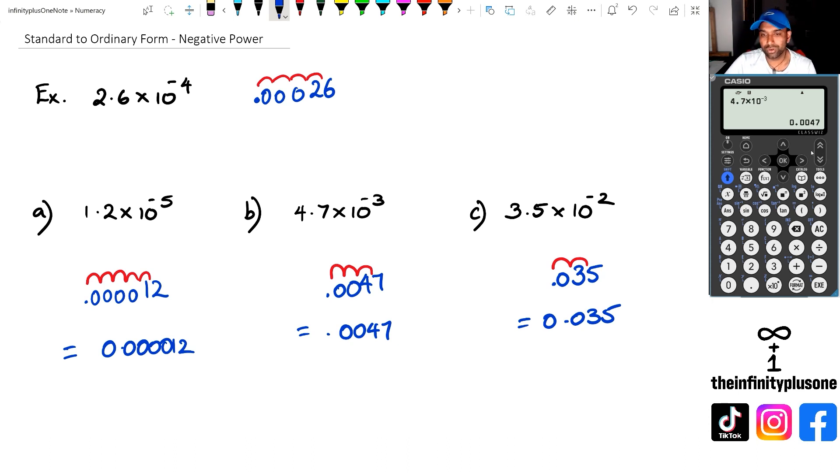Sometimes we just like to write the zero in front of the decimal point so people can actually see the decimal point. So 0.035 is my answer for c). But let me just check that. So I got 3.5 times 10 to the power of negative 2, and that is giving me 0.035. Cool.